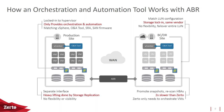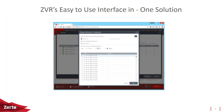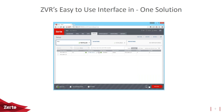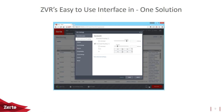The Zerto interface is all-in-one. When you want to recover you have checkpoints — you can recover from the latest checkpoint or go back in time to recover from seconds before the disaster. Every virtual machine, whether you keep a journal for one hour or 30 days, gives you hundreds if not thousands of checkpoints to recover from. Going back to the second before your outage is hugely impactful. Everything you need is from this same interface — to deploy application appliances you click the Setup tab, select your hosts and datastore, and you're off.